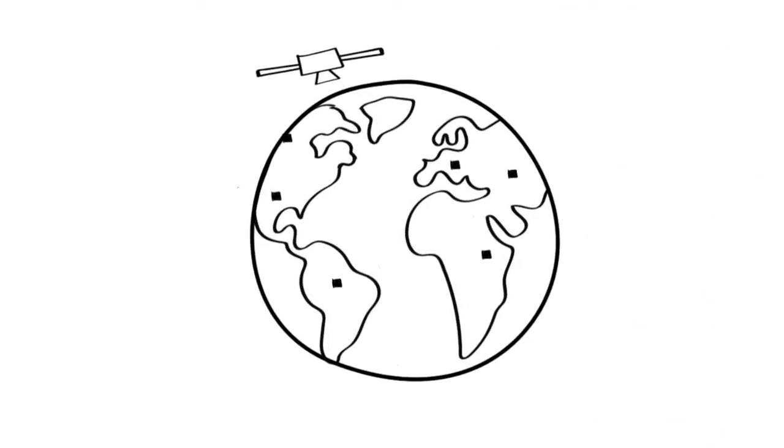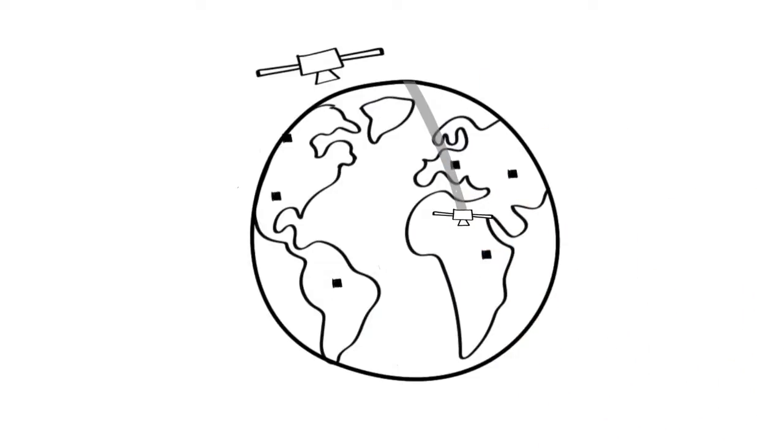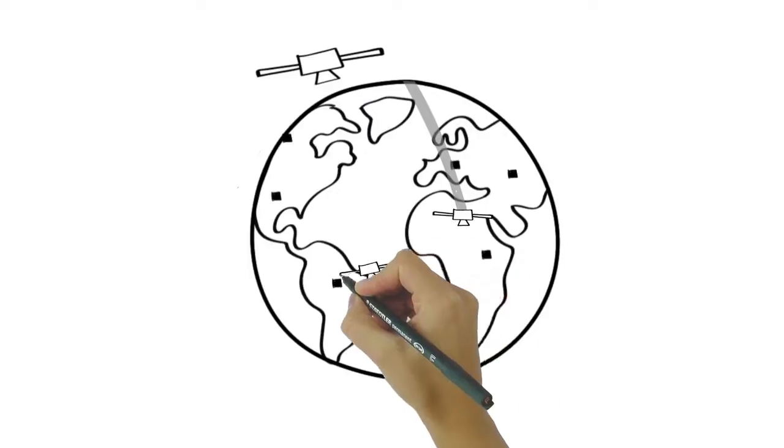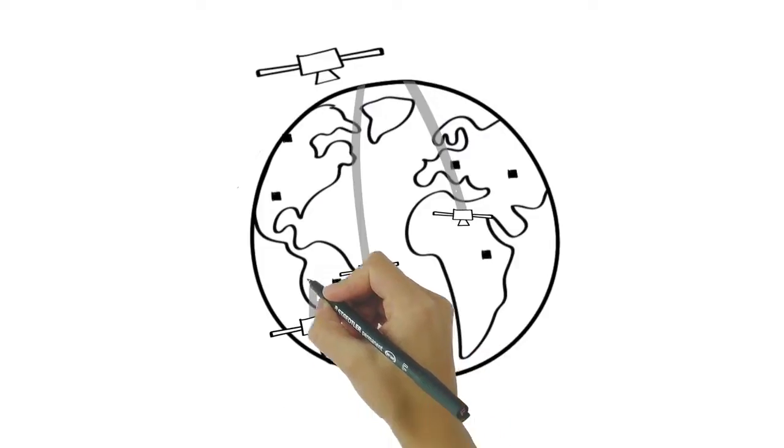However, satellites are always moving. They pass over a region affected by a disaster for only a few seconds, and return anywhere from hours to days later. It is unlikely that a single satellite would be in place to witness a disaster when it happens.